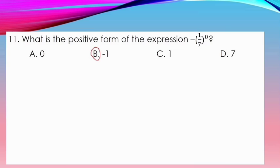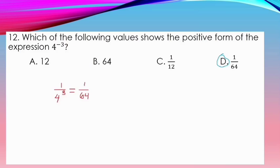Let's check your work. For number 11, our answer is negative 1. Why? Following PEMDAS, we solve the exponent first: 1 over 7 to the power of 0 equals 1. Then our sign is negative, giving us a result of negative 1. For number 12, our answer is D: 1 over 64. Because 4 to the power of negative 3 — its reciprocal is 1 over 4 to the power of 3 — equals 1 over 64.